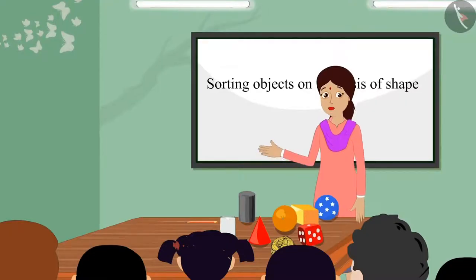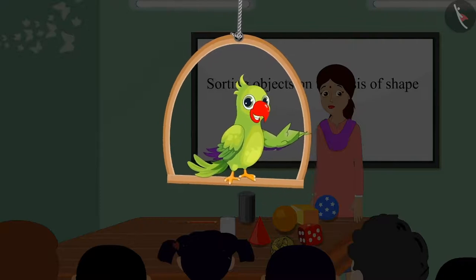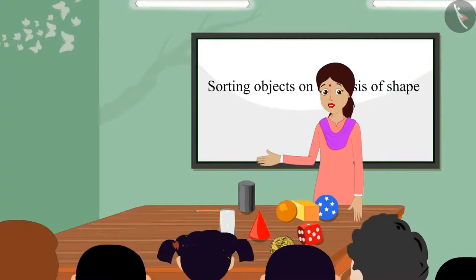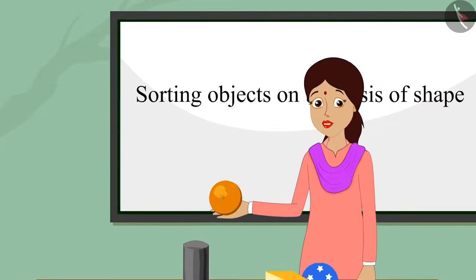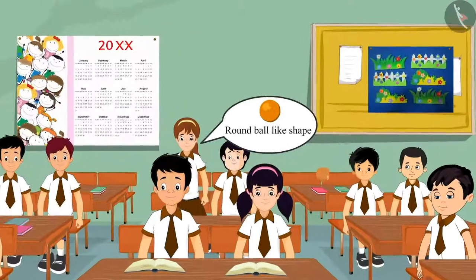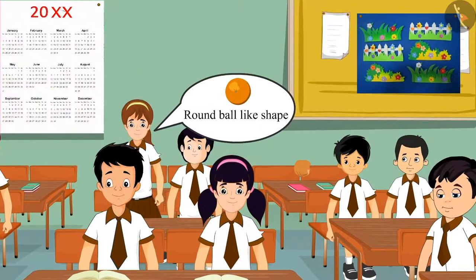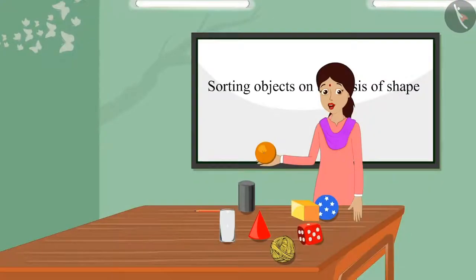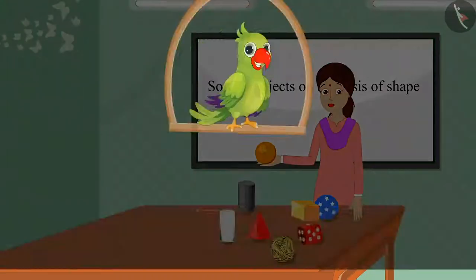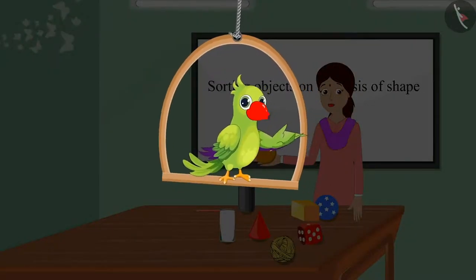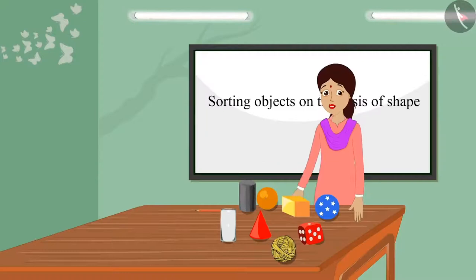The teacher shows the objects and asks children to identify them. She holds up one object and asks which shape it resembles. A student answers: 'Teacher, this is a round ball-like shape.' The teacher confirms: 'Well done, Arty! You are right, this has a round ball-like shape.'